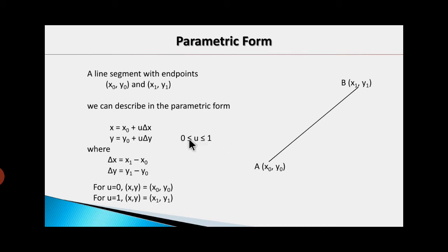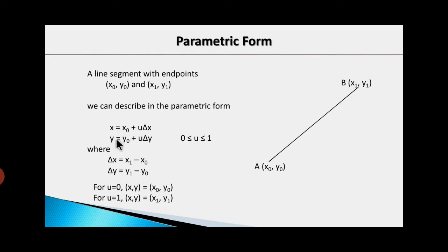If you put the value of u=0 in this equation, this term becomes 0, x becomes x0, and y becomes y0. So putting u=0 we get (x0, y0), that is the starting endpoint. And if you put u=1, you get x1 and y1 — that is the last endpoint of the line.